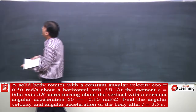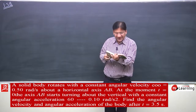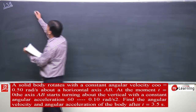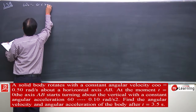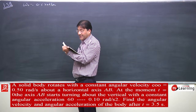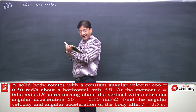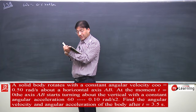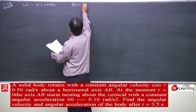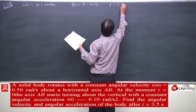I would solve problem number 1.58 for you, its continuation of 1.57. Problem that is equal to 0.5 radian per second square. A solid body rotates with constant angular velocity omega naught about horizontal axis ab. At the moment t equal to 0, the axis ab starts turning about vertical with constant angular acceleration beta naught, that is 0.1 radian per second square. Find angular velocity and angular acceleration of the body at time 3.5 seconds.